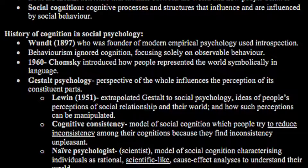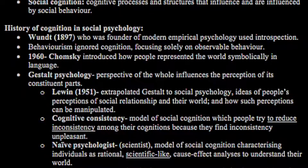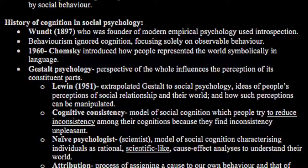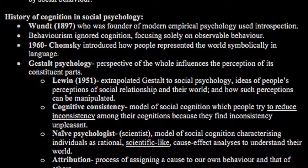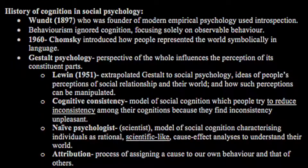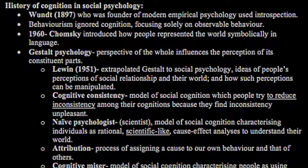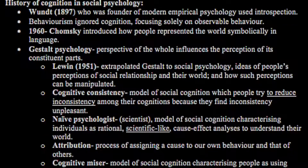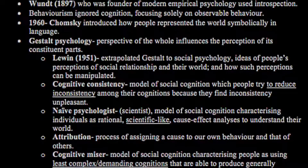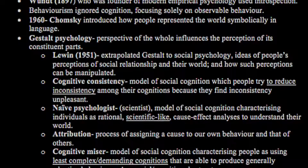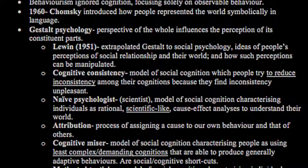Cognitive consistency is the model of social cognition where people try to reduce inconsistency among their cognitions because they find inconsistency unpleasant — basically, no one wants to look like a hypocrite. There is also the idea of a naive psychologist, in which it is assumed that people think like scientists. This model of social cognition characterises individuals as rational and scientific-like, functioning on the basis of cause and effect analyses to understand their world. Attribution is the process of assigning a cause to our own behaviour and that of others.